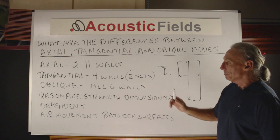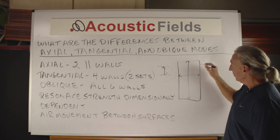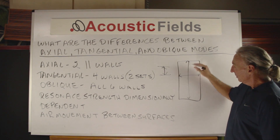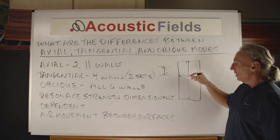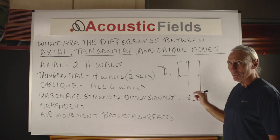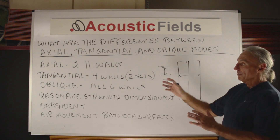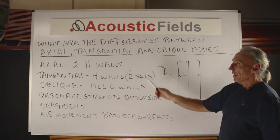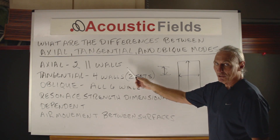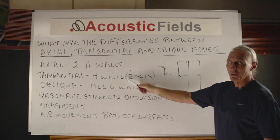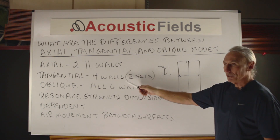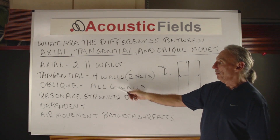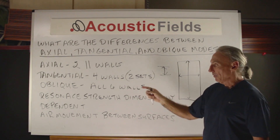Tangential is between four walls. So we have pressure that occurs between two parallel walls and then two more parallel walls. That's the definition of tangential. Axial pressure is always much stronger than tangential, and tangential pressure is always much stronger than oblique.